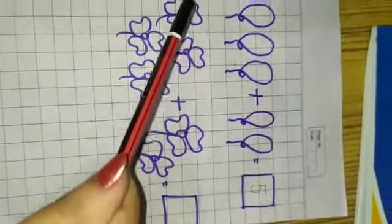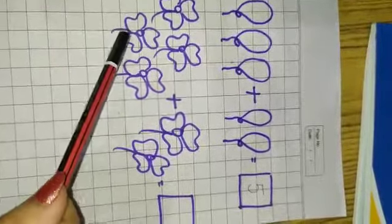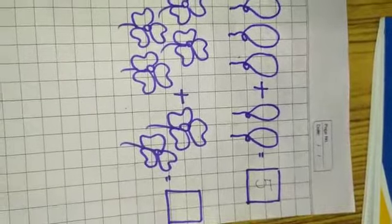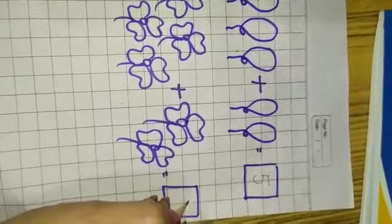Now count flowers. One, two, three, four, five, six. How many flowers are there? Write here, six.